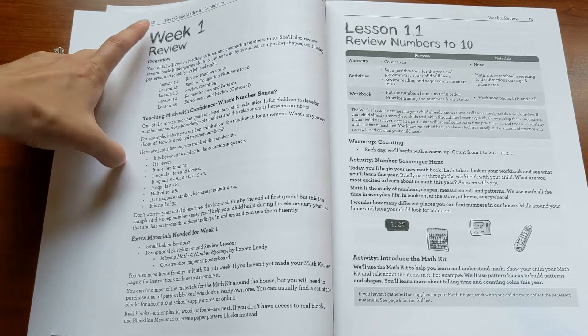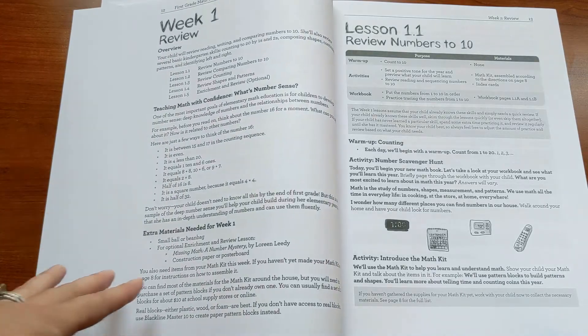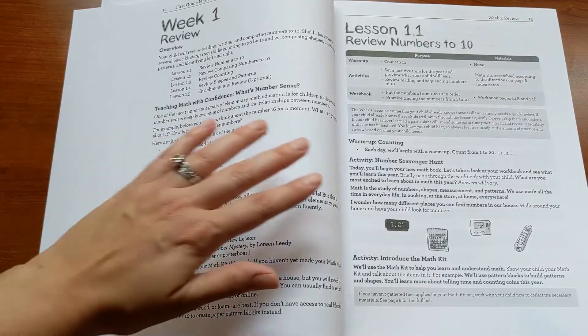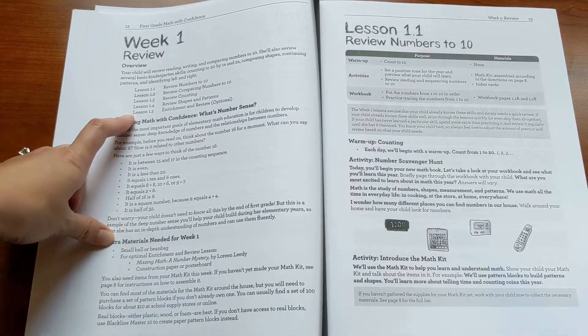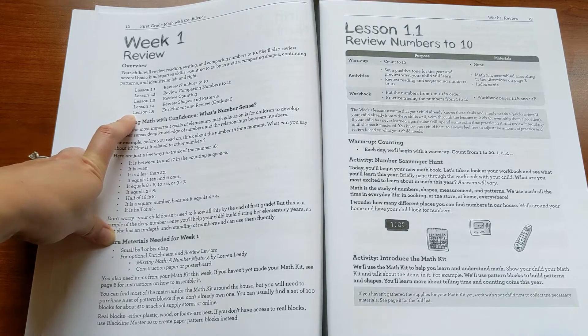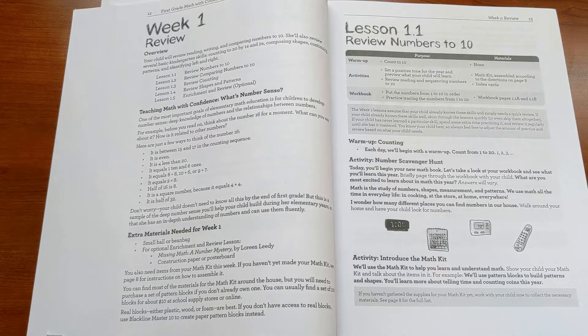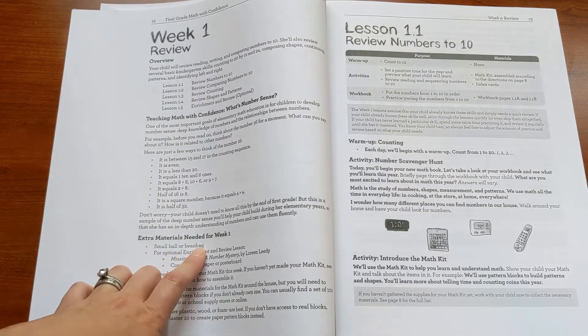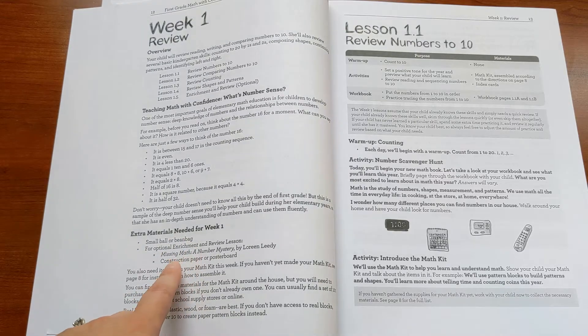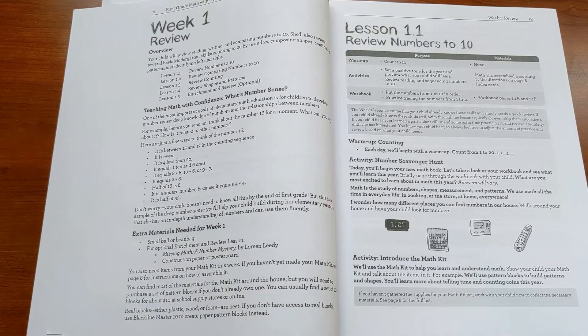Then each unit is divided into weeks, and so week one is a review unit, and here there's the overview, some little—this is called teaching math with confidence—a little feature I include to help you grow your knowledge as a math teacher as you're teaching, and then any extra materials you need. And these are typically really simple, like this week you'll need a small ball or bean bag, and the regular lessons, and if you choose to do the optional enrichment lesson, you'll need a picture book and some construction paper, and that's it.